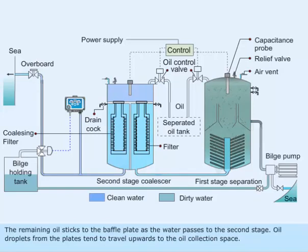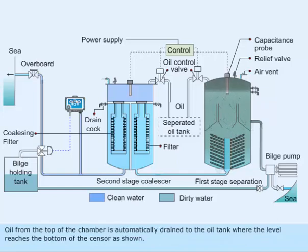The remaining oil sticks to the baffle plates as the water passes to the second stage. Oil droplets from the plates tend to travel upwards to the oil collection space. Oil from the top of the chamber is automatically drained to the oil tank when the level reaches the bottom of the sensor.